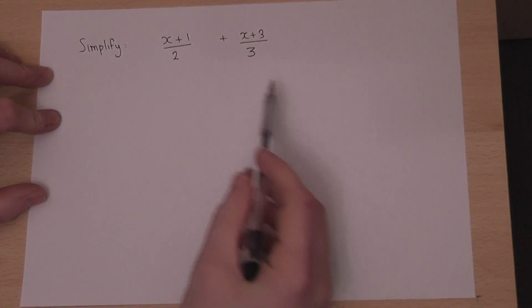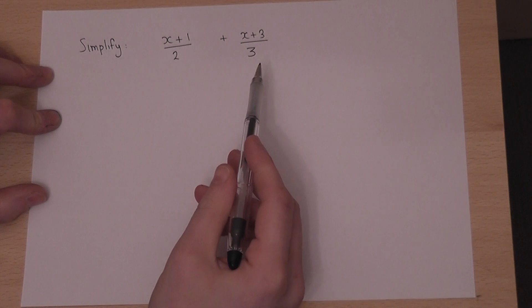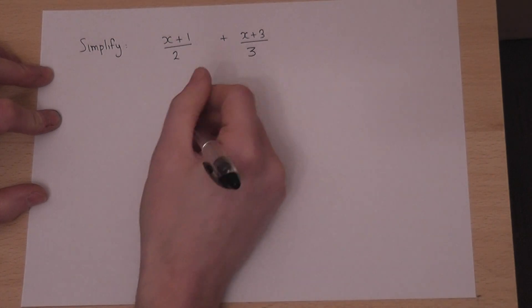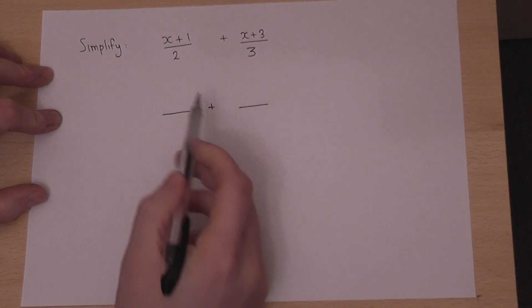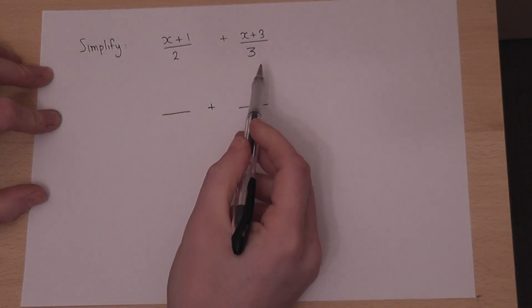If you're asked to simplify two fractions, then it wants you to add together the fractions. Now to do this, we have to find a number which both 2 and 3 go into, which of course is 6.